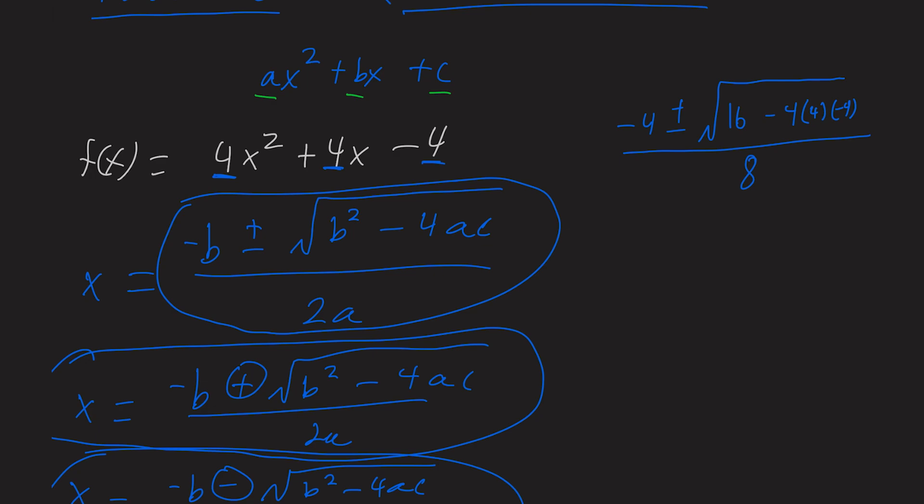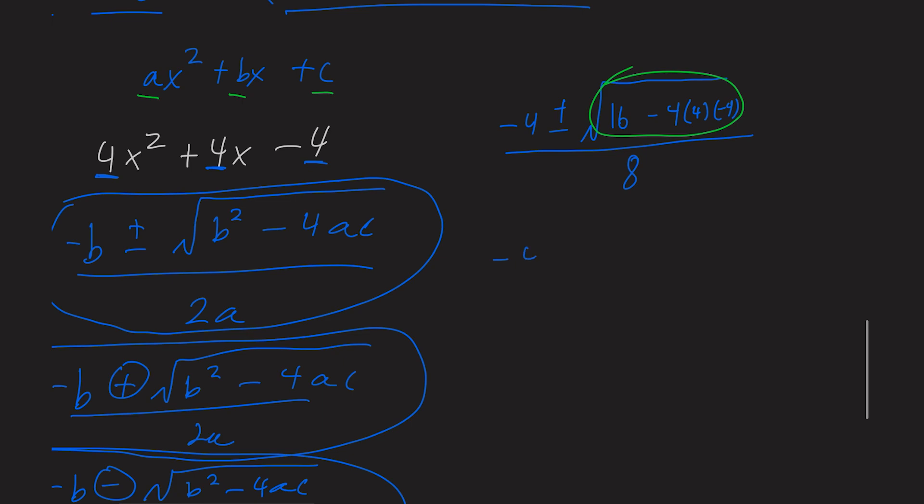So let's simplify what's inside of our radical first. This is now going to become negative 4 plus or minus rad 16 minus negative 64. And if we cancel our negatives, that becomes 80, all over 8.